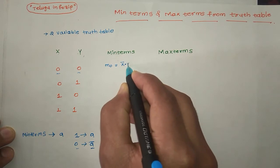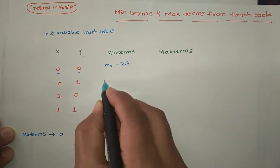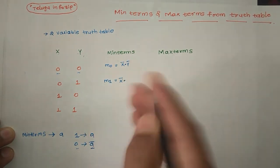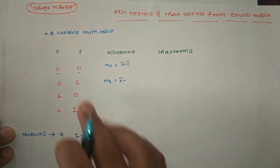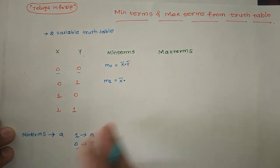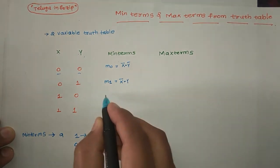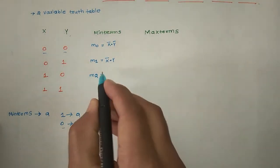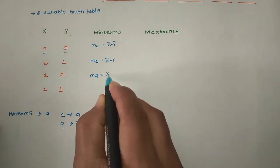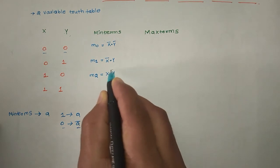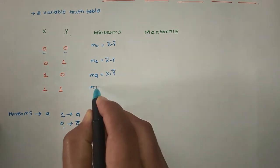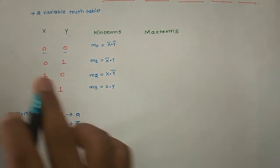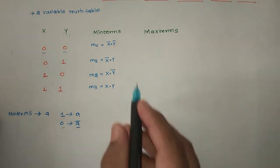Next m1: X bar dot Y. Next m2: X dot Y bar. Next m3 is equal to X dot Y. So this is min terms representation of the input variables.